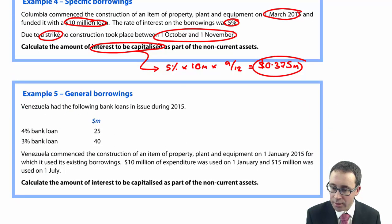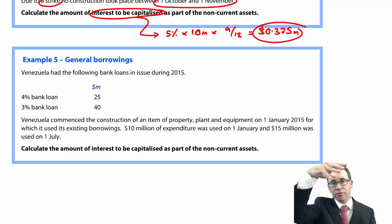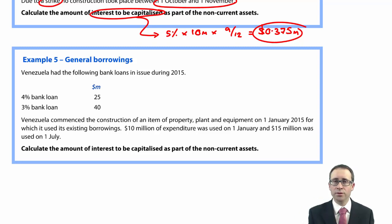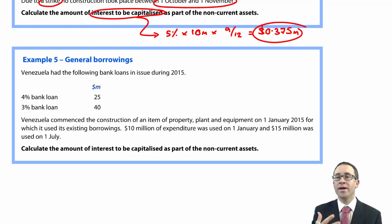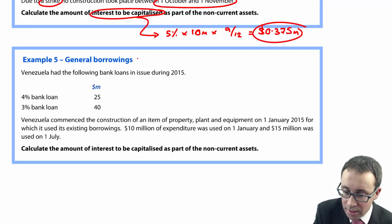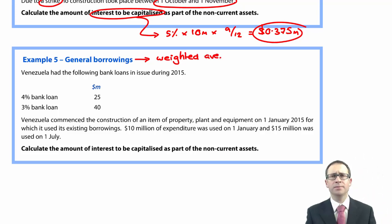Moving on to general borrowings: with general borrowings, you might have a centralised treasury function with a pool of loans. A subsidiary constructing an asset borrows from that central pool — there are no specific borrowings. The issue is what rate of interest to apply. With general borrowings, you calculate a weighted average rate of interest, weighted based upon the value of each loan.